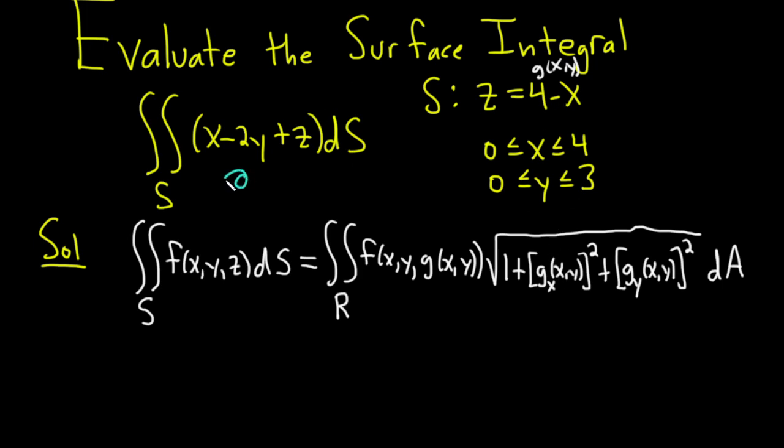So the partial of z with respect to x is going to be negative 1, because the derivative of 4 is 0 and the derivative of x is negative 1. And the partial of z with respect to y is going to be 0 because there's no y there.